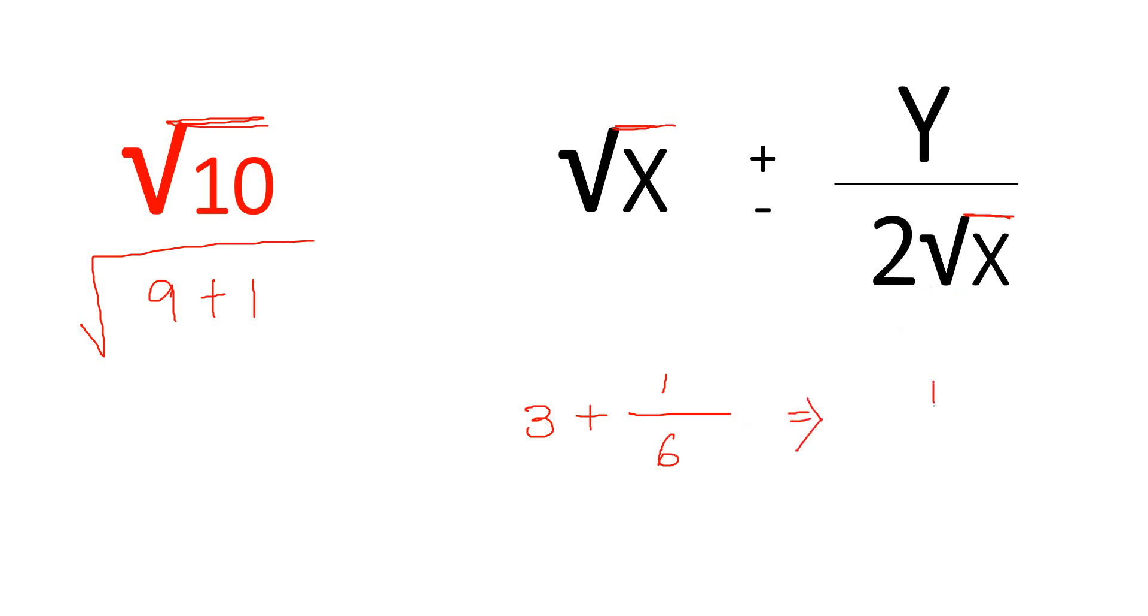3 is 18 plus 1 is 19 by 6 is the answer. You can solve this. 3 is 18, 10 is 6, 1 is 6, right? 48 is 6, 36 is the answer. Approximate value is 3.16 is the answer. This is the root of 10.